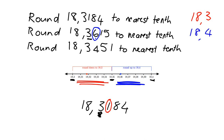Okay, you try quickly now. Round 18.3451 to the nearest tenth. Pause the video and do this in your homework books now. Again, we're in the same picture. We're lying between 18.3 and 18.4. Because we're rounding to the nearest tenth, we look 1 to the right of the tenths digit, and we see that it's a 4, so we're sitting below 18.35 and so we will be rounding down to 18.3.